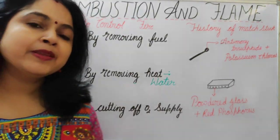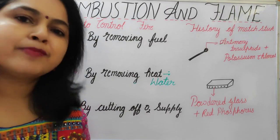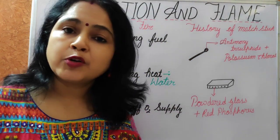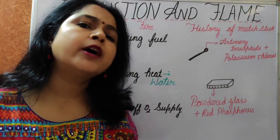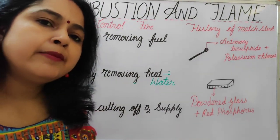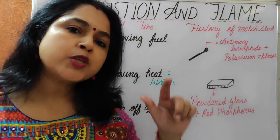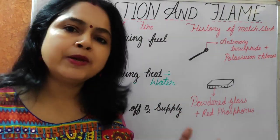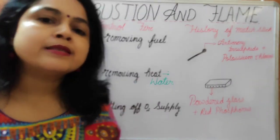Welcome children. Today we are going to discuss about the history of mastic. Mastic is a very important part of our life. The history of mastic is near about 5,000 years old. In the first time, people used to use pine woods on the surface of sulfur coating and used to use the mastic in that time.